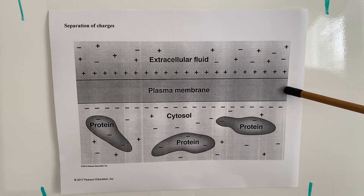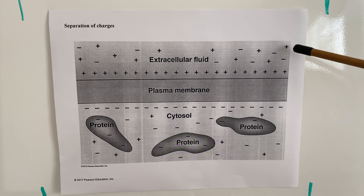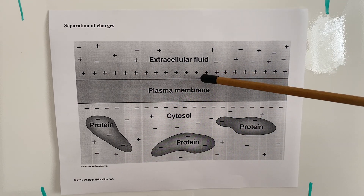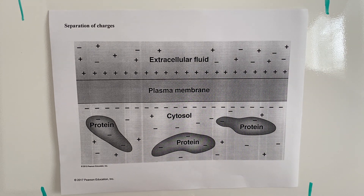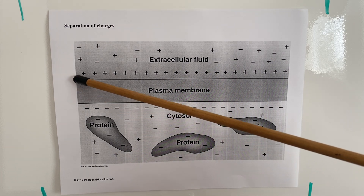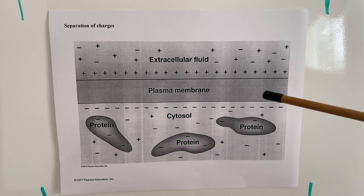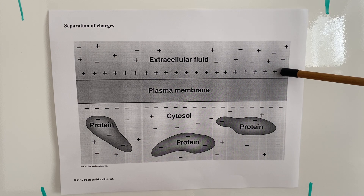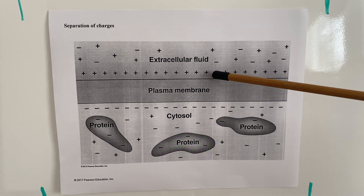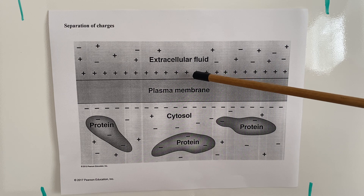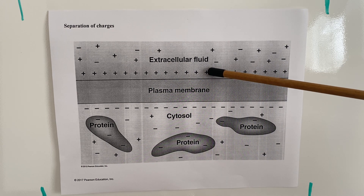Here we have our plasma membrane — this is still a close-up of the axon. Outside of the cell, we have a variety of both positively and negatively charged ions, which include sodium, potassium, and chloride. However, a lot of these positively charged ions, specifically sodium, line up along the plasma membrane. In general, you're going to have a net positive charge — there are more positively charged ions than negative ones on the outside of the cell.